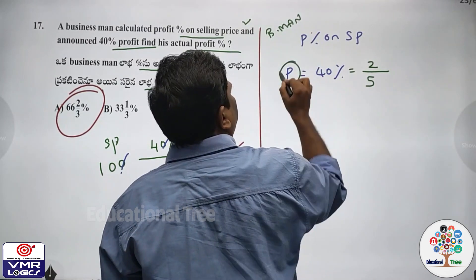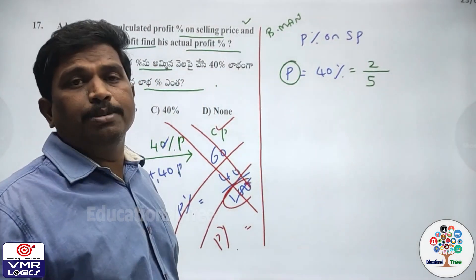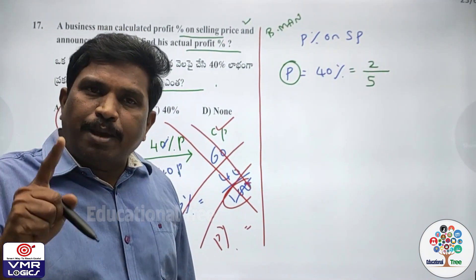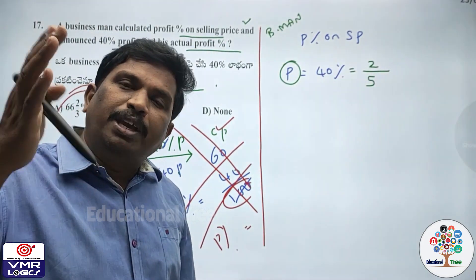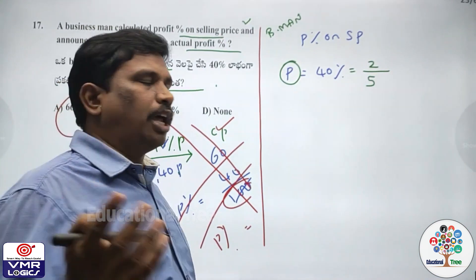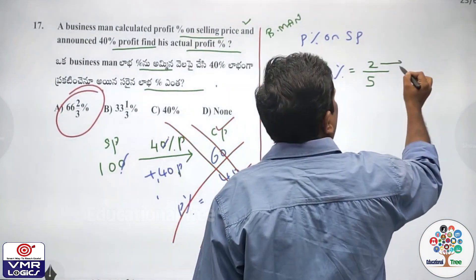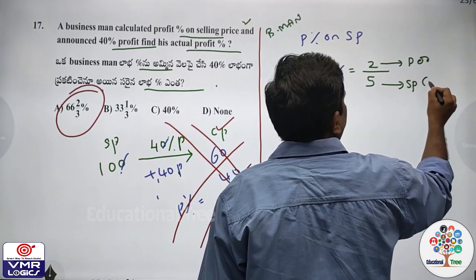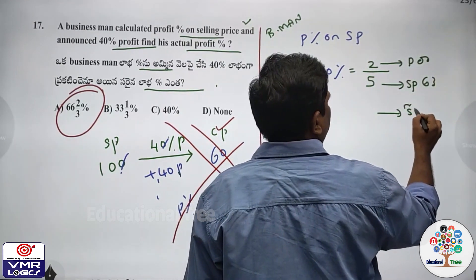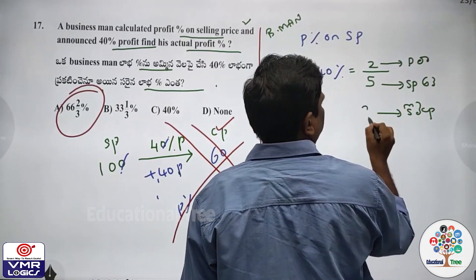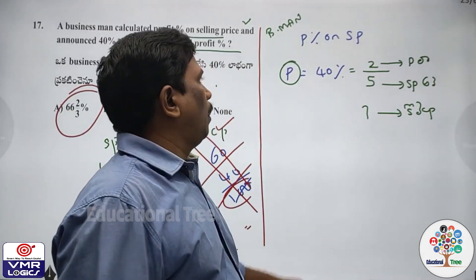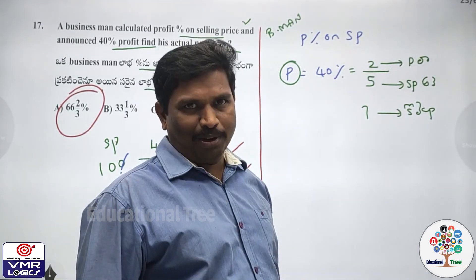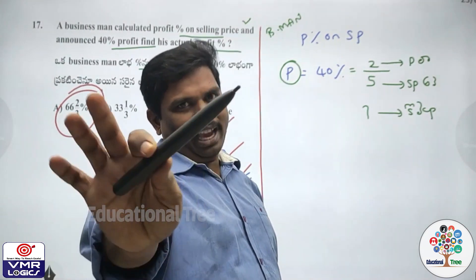We need the formula: profit by SP. Businessman uses profit by SP into 100. So the profit is 2, and the SP is 5.